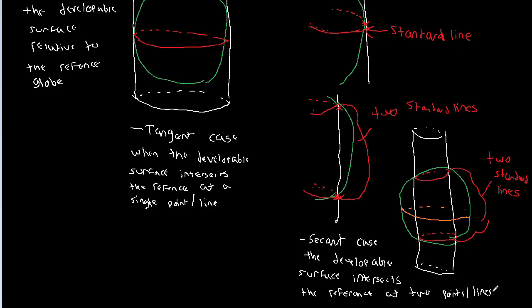The idea here is that what we're doing is we're controlling how many places or how many times the developable surface interacts with the reference globe. In the tangent case we set it up so that it only interacts once. In the secant case we've shrunk the developable surface or we made the developable surface tighter so that it actually cuts through the reference globe and intersects twice. So hopefully this all makes sense.